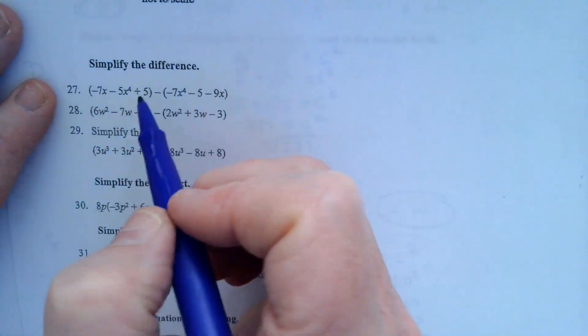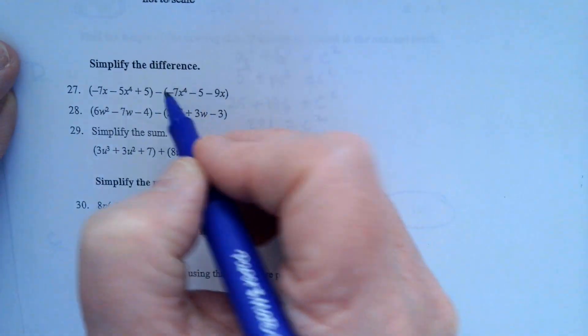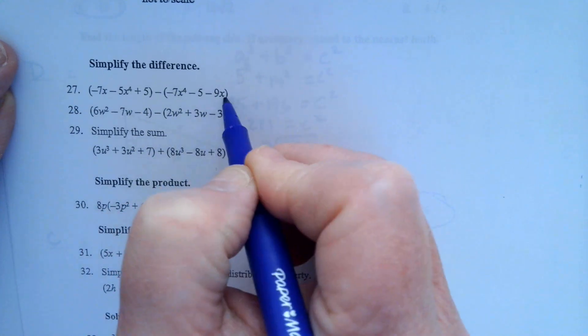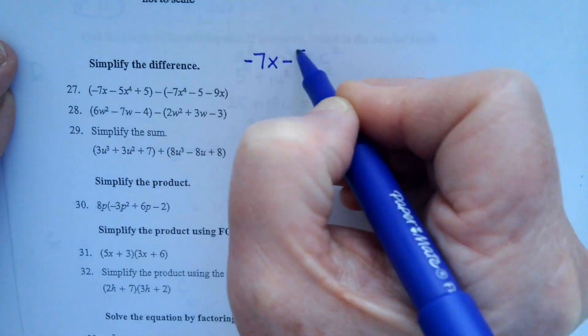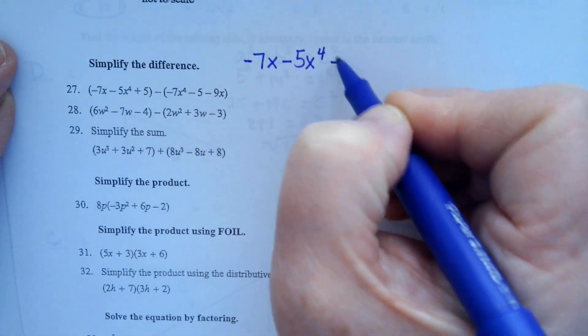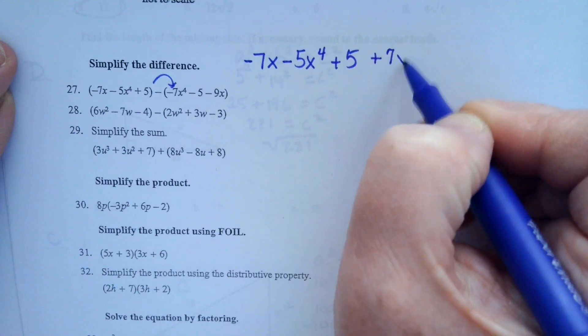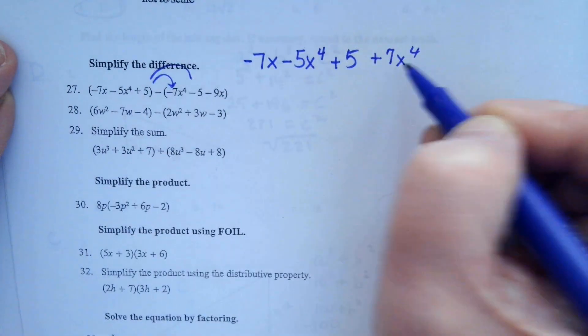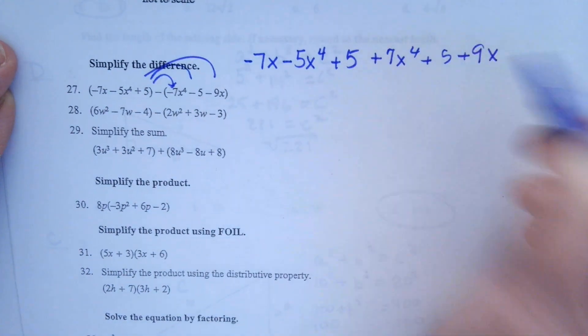27, simplify the difference. When you are subtracting, you need to rewrite the problem because that negative is going to affect everything in the back. So it is negative 7x minus 5x to the 4th plus 5. And then when I distribute, that's going to be plus 7x to the 4th plus 5 plus 9x.